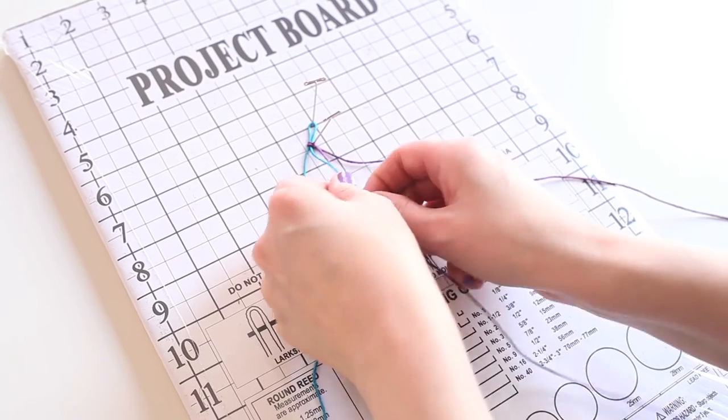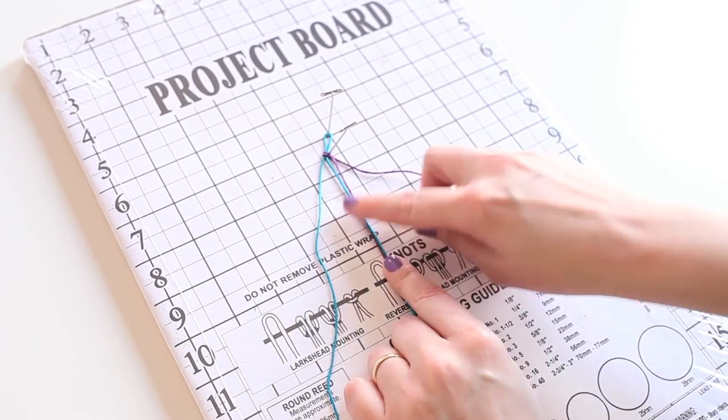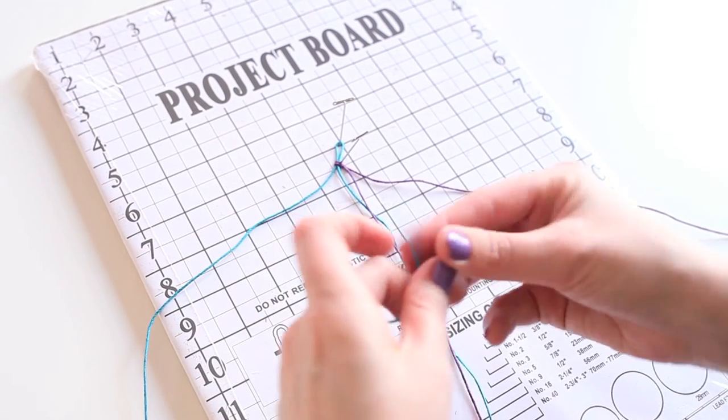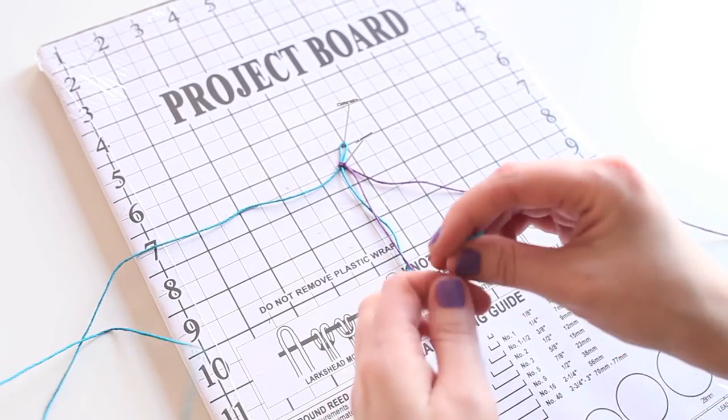Now we're going to take our two shorter pieces of string and have them run down the middle of our project board. Next, I'm going to take the blue string and tie my first knot for this bracelet.